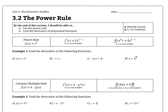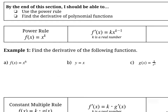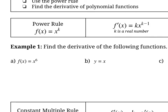Here we're going to learn about the power rule, which is basically one of the shortcuts that allows us to take the derivative without having to use the difference quotient. The power rule says if we have a function x to the power of some value k, the derivative is just going to be k times x to the power of k minus 1. So we bring down that k in front, and then remove one from the exponent.